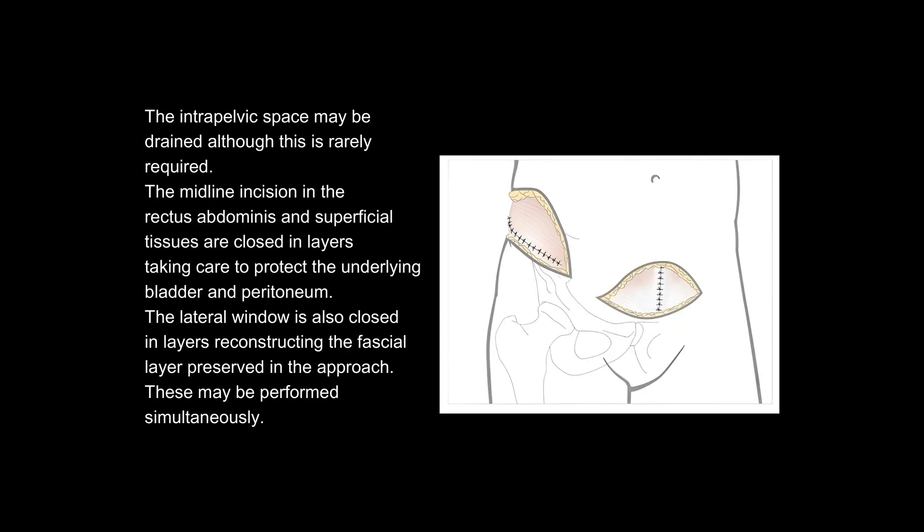The intrapelvic space may be drained, although this is rarely required. The midline incision in the rectus abdominis and superficial tissues are closed in layers, taking care to protect the underlying bladder and peritoneum. The lateral window is also closed in layers reconstructing the fascial layer preserved in the approach. These may be performed simultaneously.